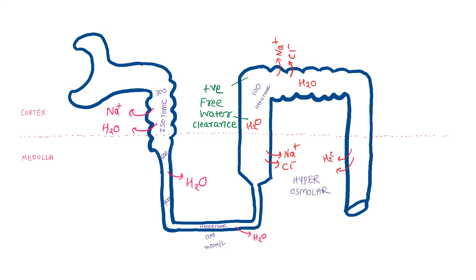In the collecting ducts, in the presence of anti-diuretic hormone, water can be freely reabsorbed to counteract the hyperosmolarity of the medulla. The fluid inside the lumen of the collecting ducts becomes more and more hypertonic towards the medulla. So we can say that free water clearance at this site is negative, as the fluid is concentrated.